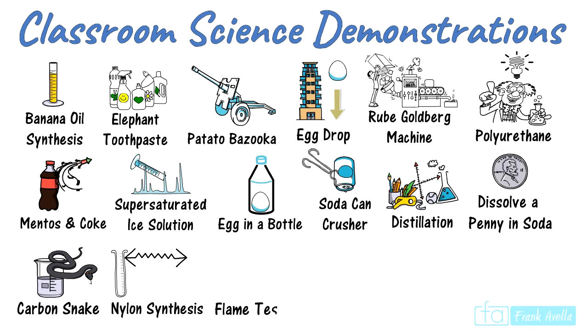Flame tests are used to identify the presence of certain metal ions. Different metal ions emit different colors when placed over a flame. Simply get a small lab spatula, place powdered samples over the flames, and you'll get to see fireworks.